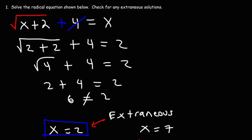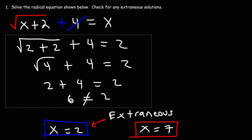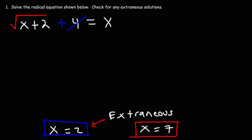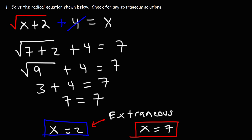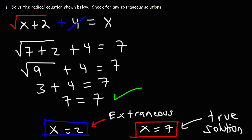Now let's try x equals 7. Replacing x with 7: 7 plus 2 is 9, the square root of 9 is 3, and 3 plus 4 is 7. Since 7 equals 7, this is the true solution — the solution that works in the original equation. So now you know how to identify extraneous solutions: take the solution, plug it into the original equation, and if it doesn't work, that solution is extraneous.